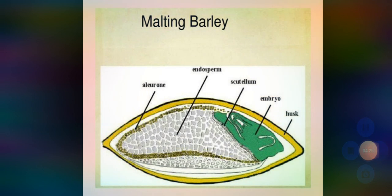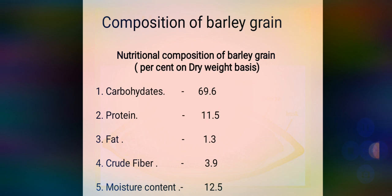The nutritional composition of barley grain on a dry basis is as follows: carbohydrate content is about 69.6%, protein about 11.5%, fat 1–3%, crude fiber 3.9%, and moisture content about 12.5%. Proteins are available at about 11.5% and consist of albumin, globulin, prolamine, and glutamine. Barley protein is lacking in the essential amino acid lysine, so its biological value is low compared to that of wheat.